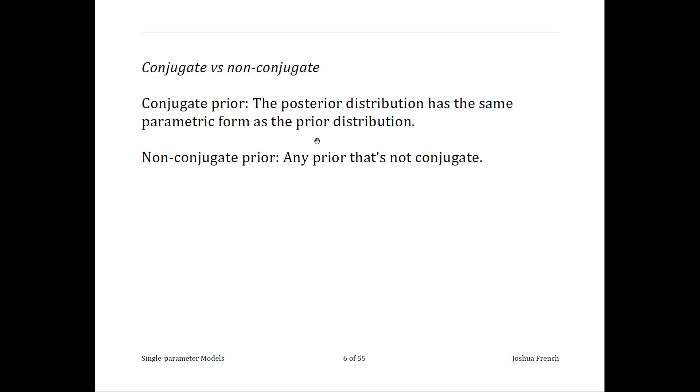A conjugate prior distribution is one for which a specific combination of data and prior distributions always results in the posterior distribution having the same form as the prior distribution. Note that these are generic distributions, like a normal(μ, σ²) distribution, not a specific case like a normal(0,1).